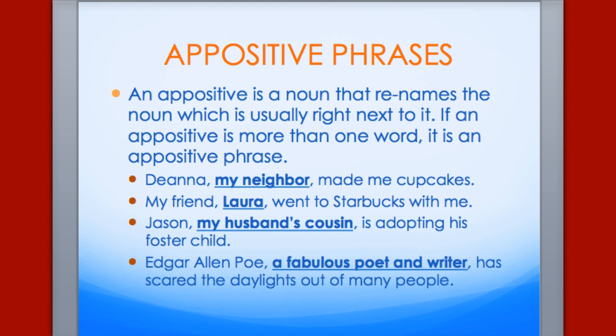Appositive phrases are something a little bit different. An appositive is a noun that renames the noun, usually right next to it. Sometimes an appositive phrase is made up of more than one word. So we have 'Deanna, my neighbor' as an appositive phrase, and 'my friend Laura' as simply an appositive.